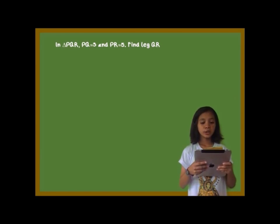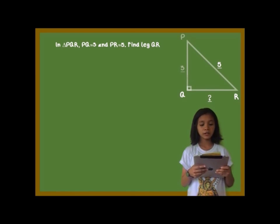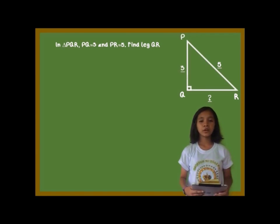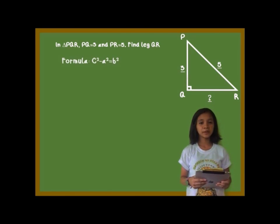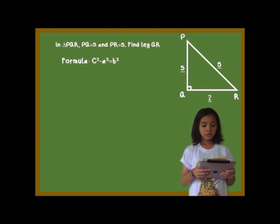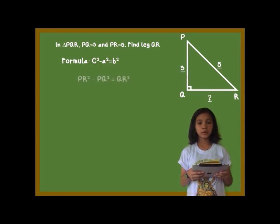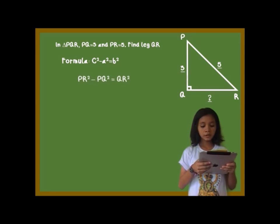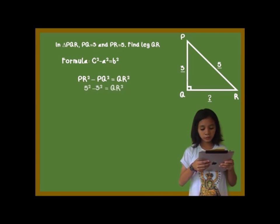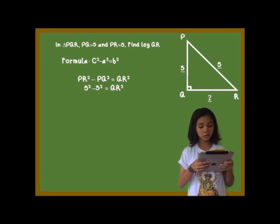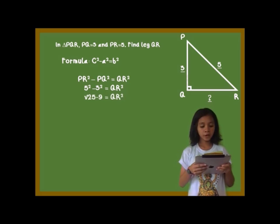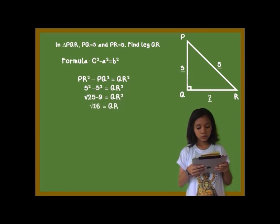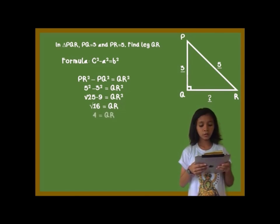In this triangle, you are asked to find the length of triangle PQR using the Pythagorean theorem. We will use the formula: b squared is equal to c squared minus a squared. So, QR squared is equal to 5 squared minus 3 squared. To find QR, we need to take the square root of the difference. QR is equal to the square root of 25 minus 9, which is the square root of 16, or 4.